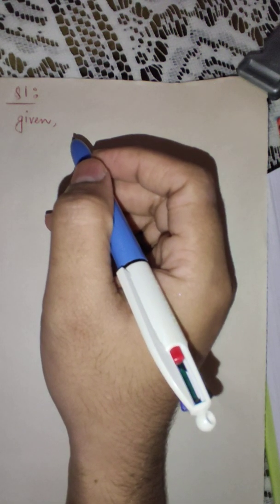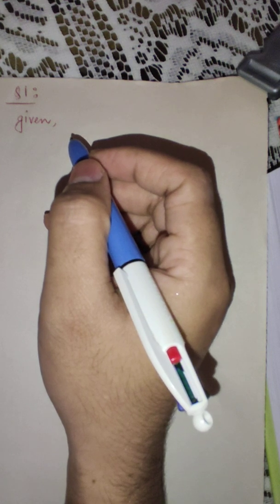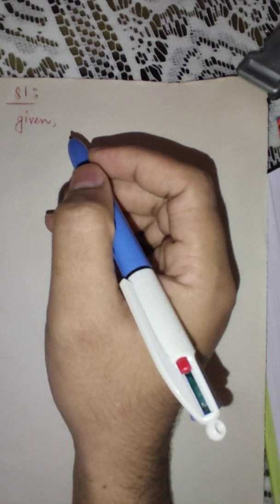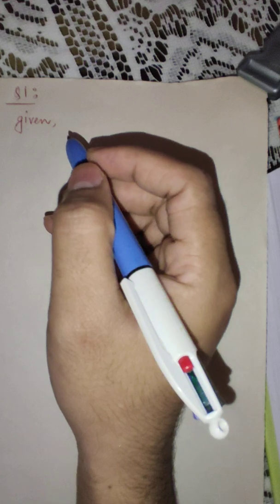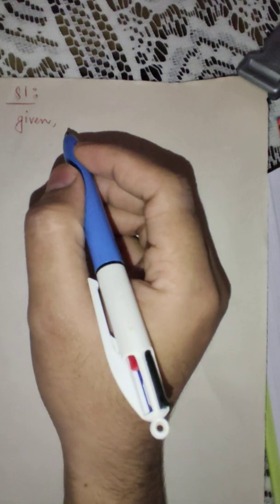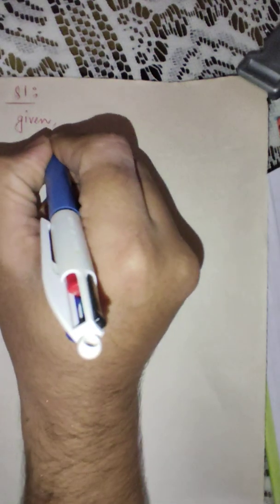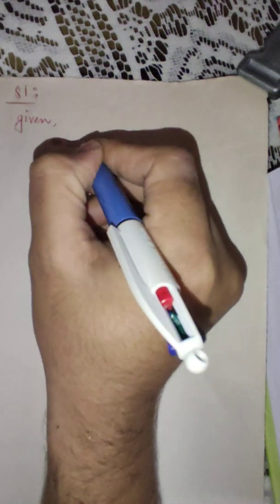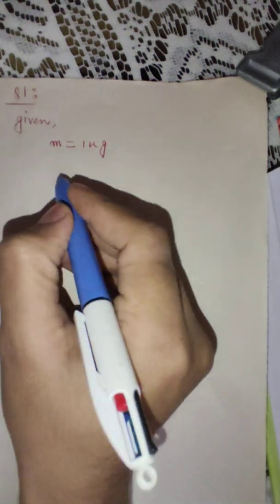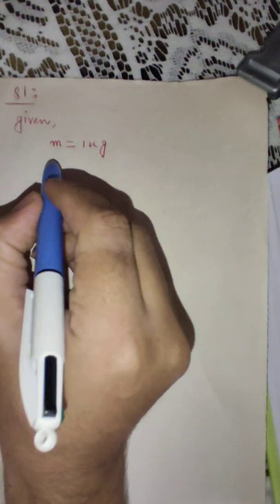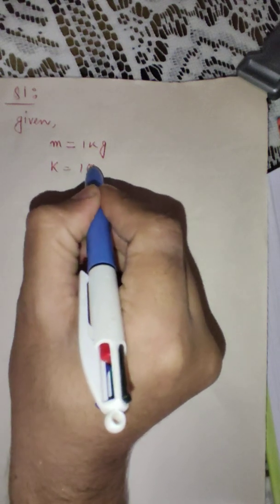This first problem says that a vibrating system having mass 1 kg is suspended by a spring of stiffness 1000 N per meter. So let us first note down the given data in the problem. The mass of the system is 1 kg, and the spring stiffness is 1000 N per meter.